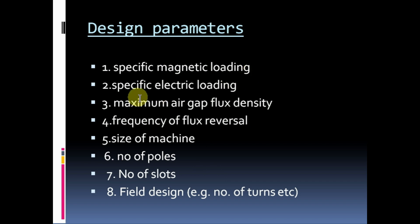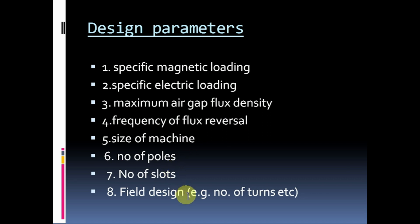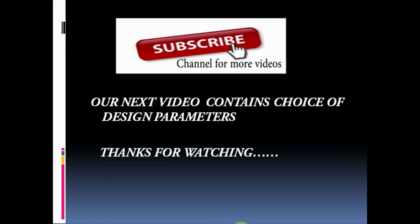Design parameters are: 1. Specific magnetic loading, 2. Specific electric loading, 3. Maximum air gap flux density, 4. Frequency of flux reversal, 5. Size of machine, 6. Number of poles, 7. Number of slots, 8. Field design — for example, number of turns.